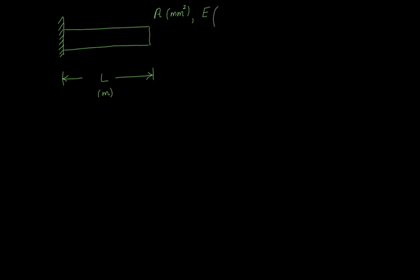Let me define all the material properties. This bar is made up of material that has got a Young's modulus value of magnitude capital E, with units usually represented as newton per mm squared. There is one more material property — density. This bar has got a density of magnitude rho, which is mass density, usually in kilogram over meter cube. When we put all the ingredients together, you have to exercise much precision and caution to make sure that the units are consistent.